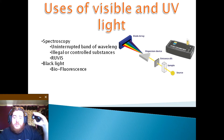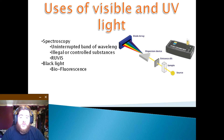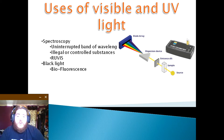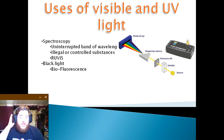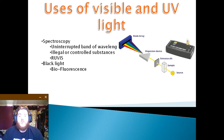As the electron loses energy, it may do so in a number of smaller steps. So on its final jump back down to its original state, it emits a wave of light with much lower energy. This lower energy means lower frequency and a longer wavelength, which means it has moved down into the spectrum of visible light, meaning that we are able to see it.